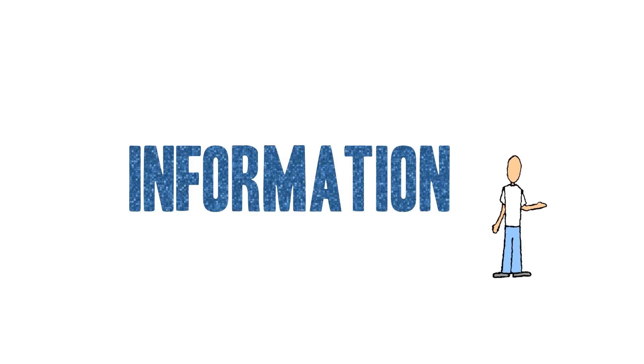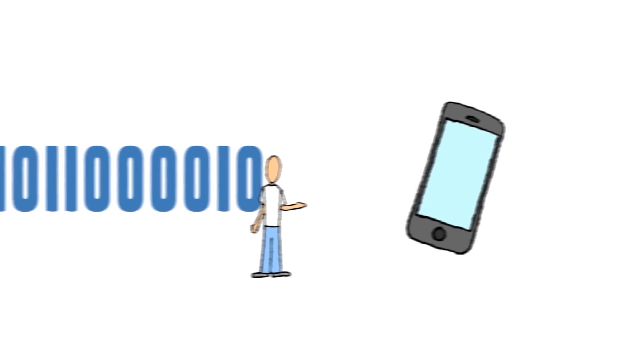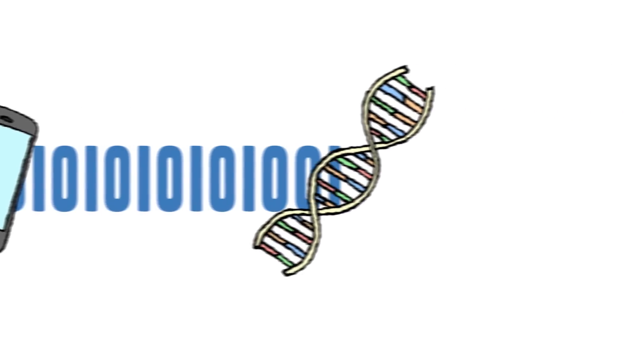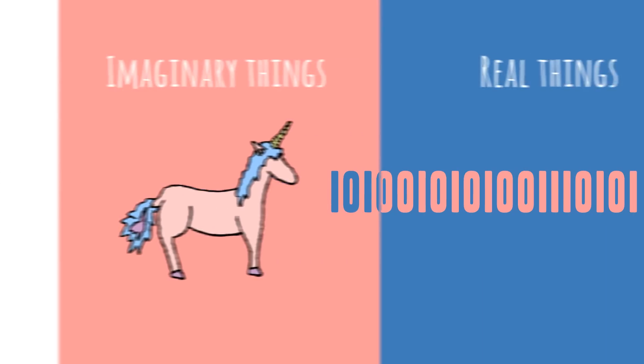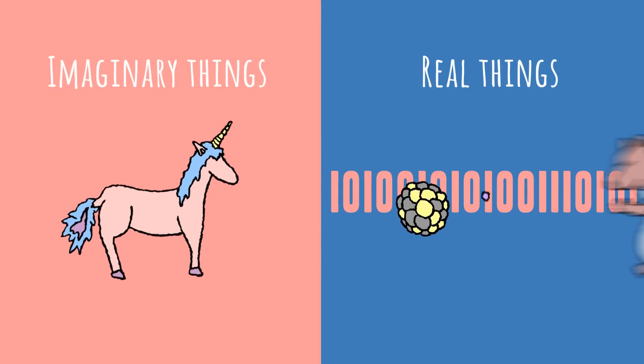We say there's information in the memory on our phones or in our DNA sequence, but is that just an idea we made up? Or is information something real, like electrons, or squirrels?